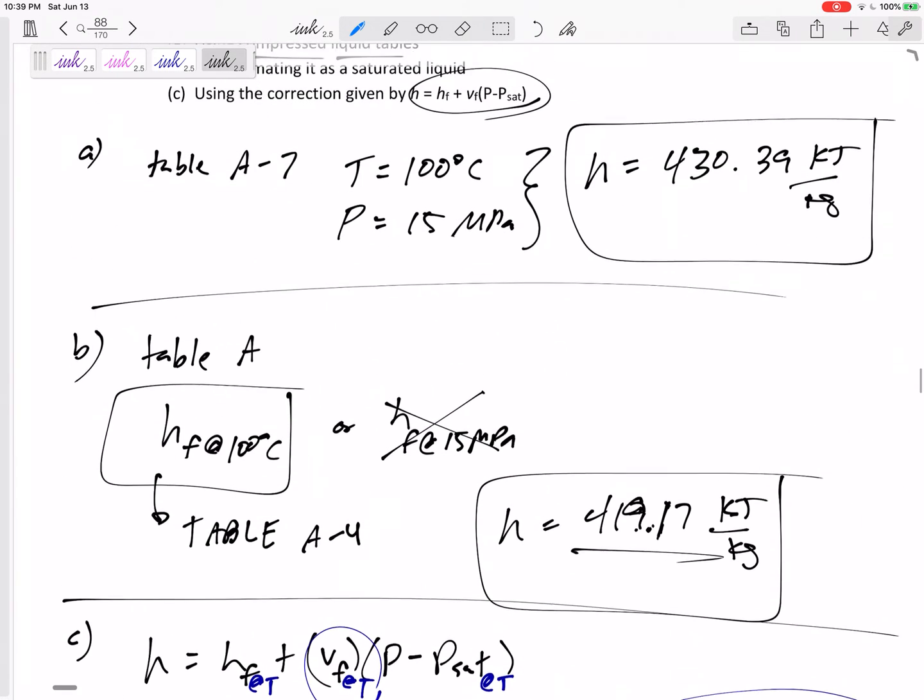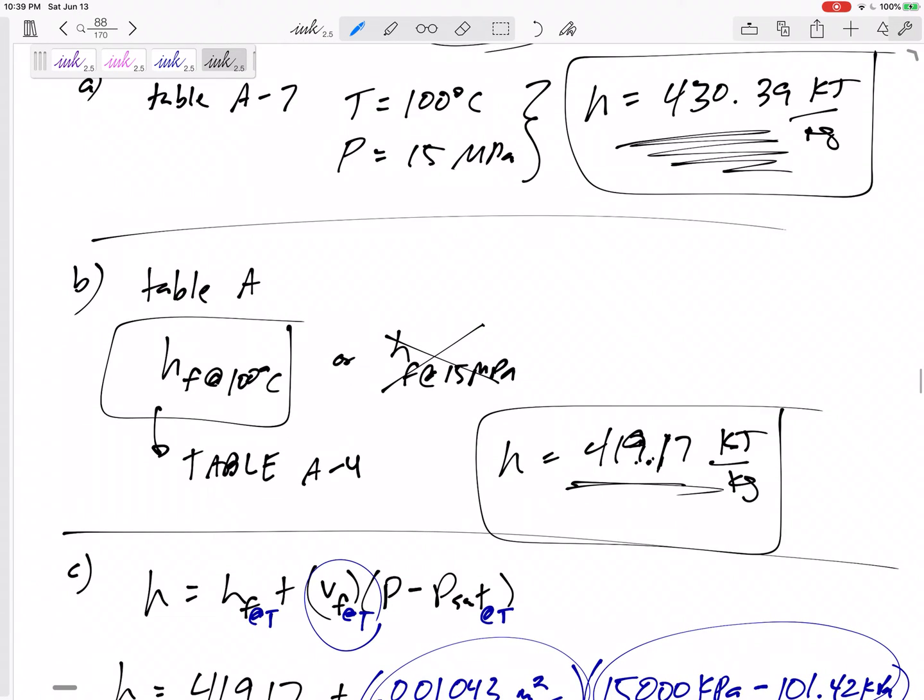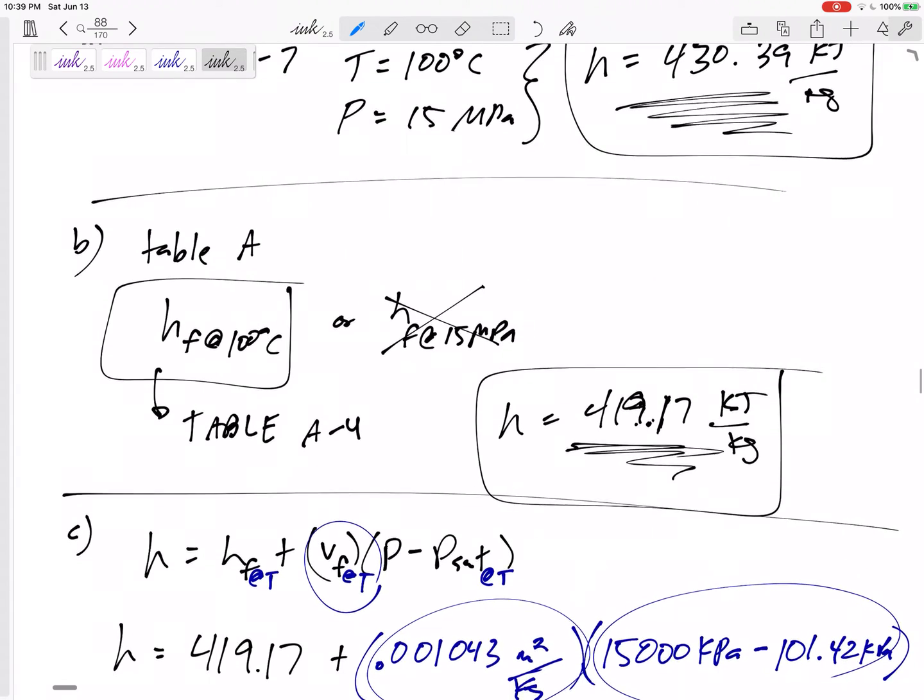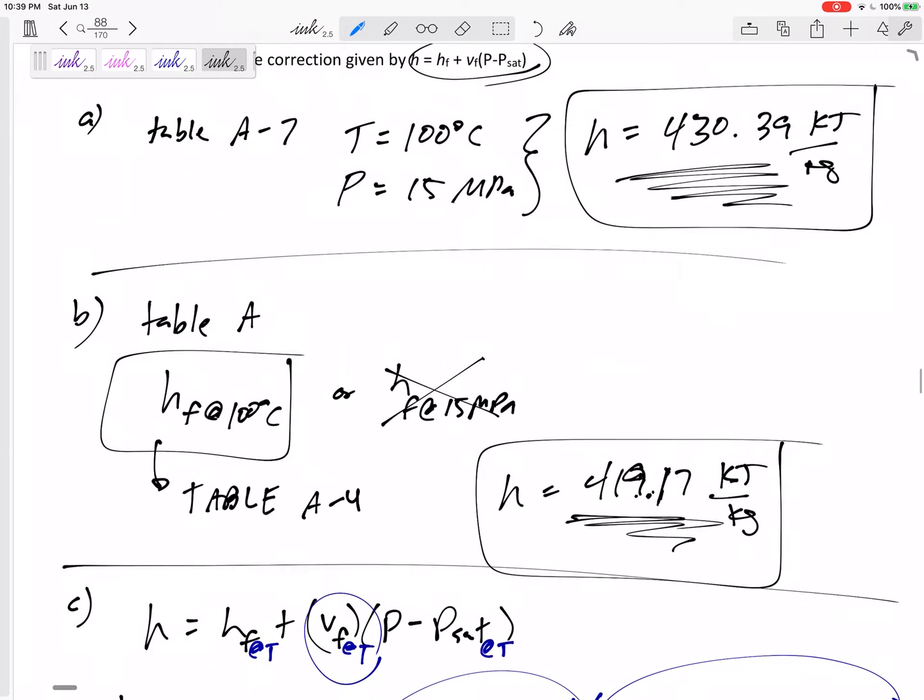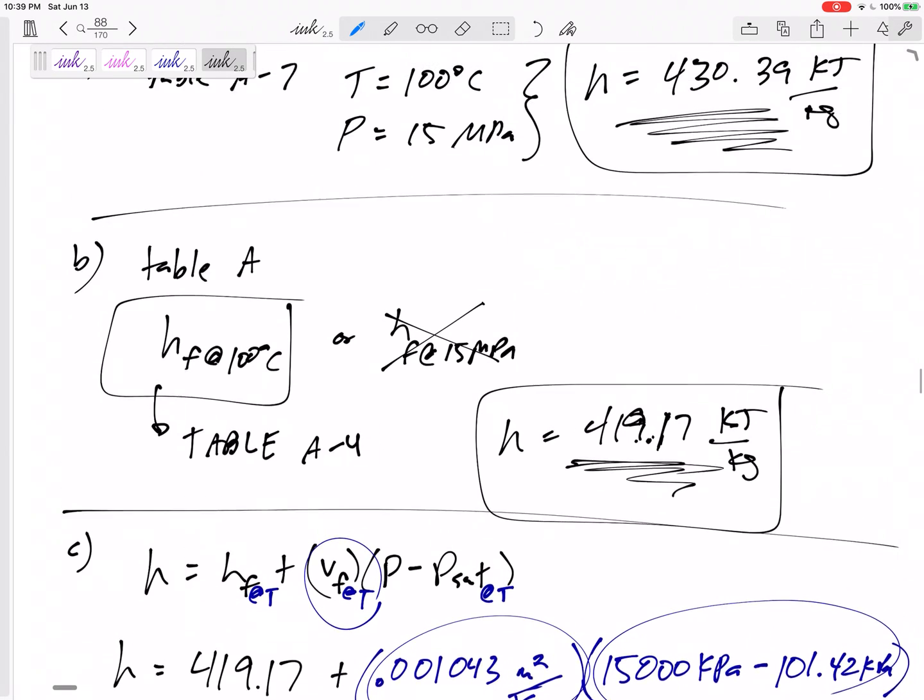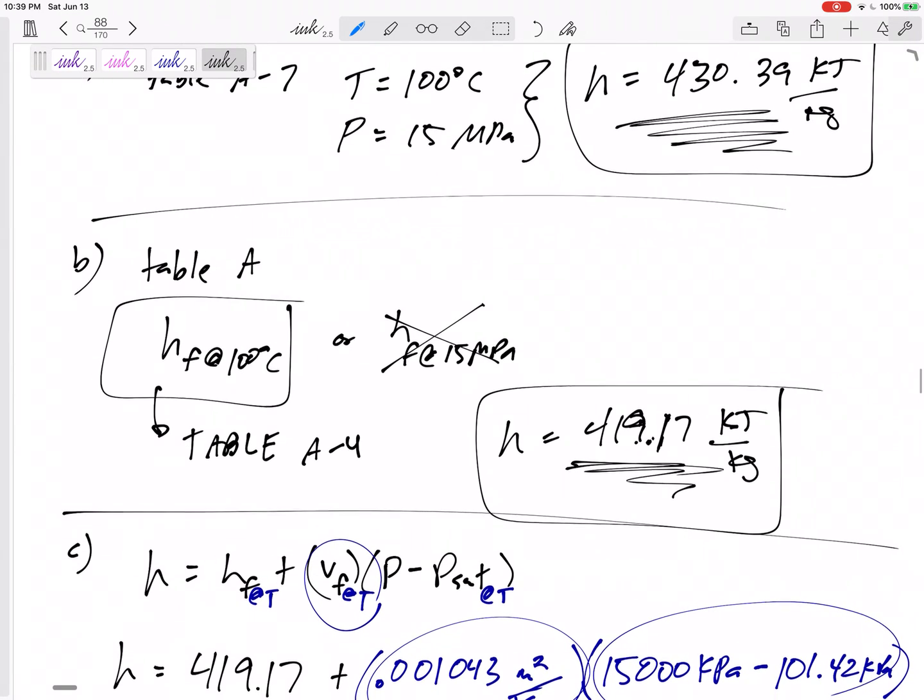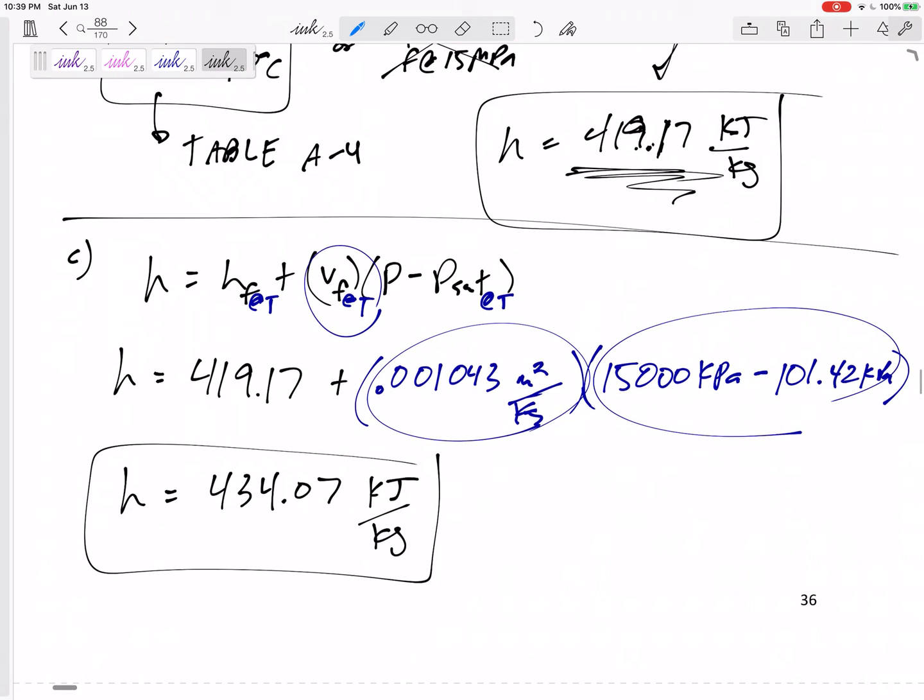So this I'd say is the most accurate value. If we guesstimate it at the saturated liquid property value, we'd guess at 419, which is about 11 off from the correct answer. If we use our correction factor, we overshoot a little bit, but now we're within under four. So it helped a little bit.